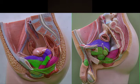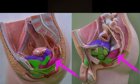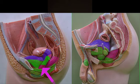The sacral nodes drain a posterior block of organs, including the inferior rectum in both sexes, as well as a portion of the vagina in females.